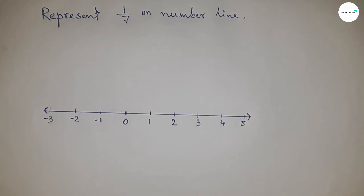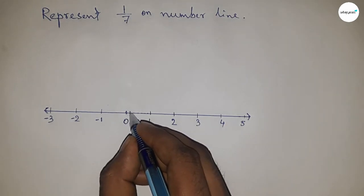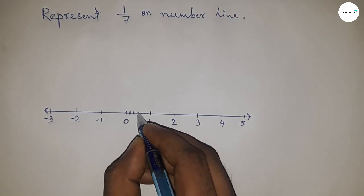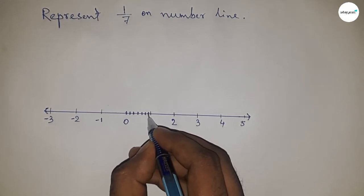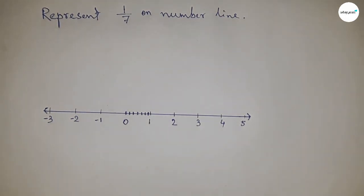0 and 1 into 7 equal parts. So we divide the distance into 7 parts this way, and